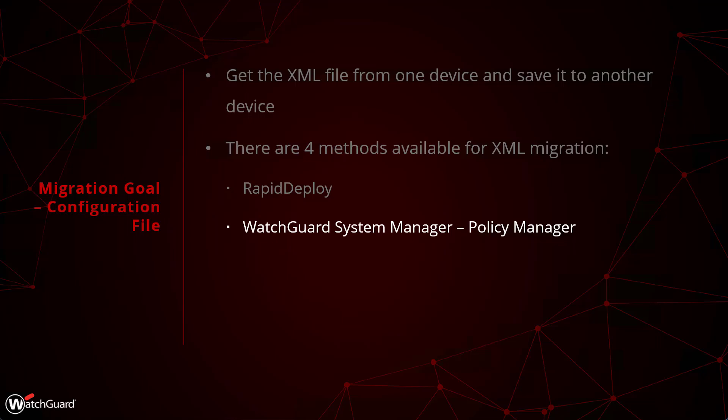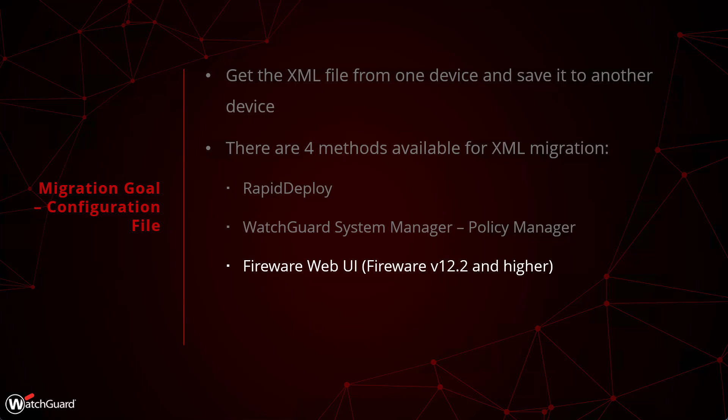The next option is WatchGuard System Manager's Policy Manager application. This is the typical way most people do a migration because Policy Manager natively works with offline copies of XML files — so if you've been using it, you likely already have configuration files available for migration purposes. Policy Manager will also validate the version upon saving: if you take an XML file that's newer than what the Firebox can handle, the Firebox will return an error message saying the configuration file is too new. You can then change the version using the 'Save As Version' option in Policy Manager, which is also useful for preparing config files for Rapid Deploy or the Web UI.